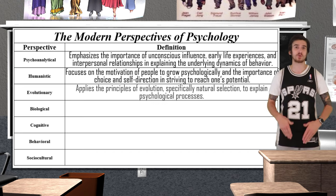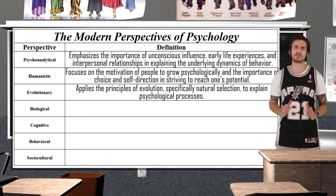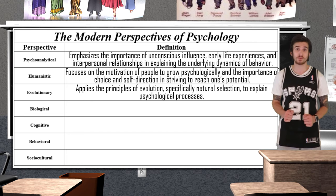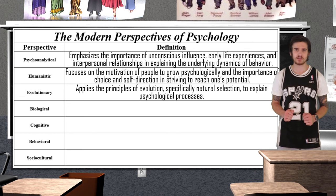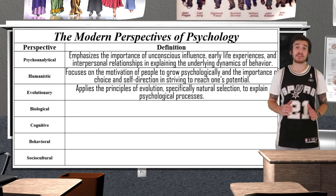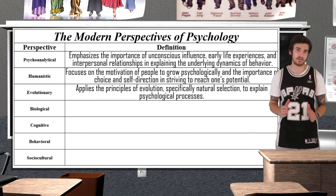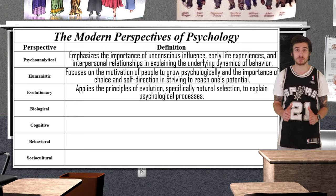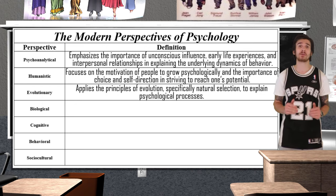Evolutionary psychologists apply the principles of evolution to the study of behavior. Psychologists who take this approach believe that psychological processes are all subject to the principle of natural selection, stating that psychological processes that help us adapt to our environment and increase our chance for survival are passed on to future generations, allowing offspring to have a better chance at survival.